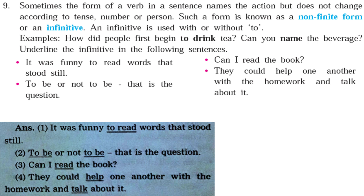Sometimes a verb in a sentence names the action but does not change according to tense, number, or person. Such a form is known as a non-finite form, also called an infinitive. An infinitive is used with or without 'to.' This is a grammar-related topic and we have previously made a video on 'to + main verb' infinitives. Now let's see the answers directly.